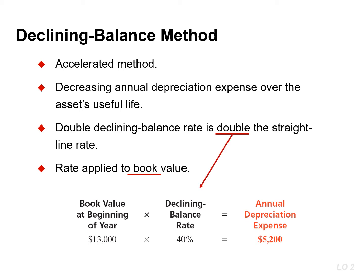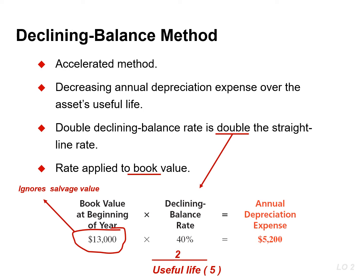You could also take the useful life and divide by two to arrive at the 40%. Book value is the cost minus accumulated depreciation. Note that salvage value is not included in the formula — it is ignored until the last year.